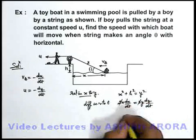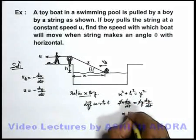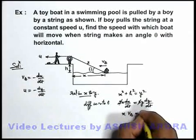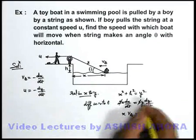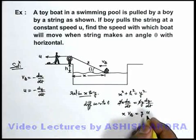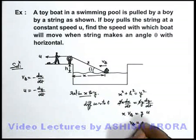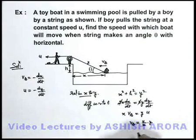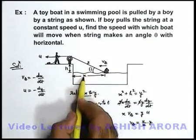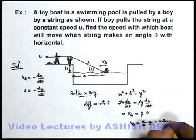Here the factor of two cancels out. We can write x·(dx/dt) = v_b and y·(dy/dt) = u, and the negative signs on both sides cancel out. So the velocity of the boat can be written as v_b = u·(y/x). Now y/x is simply sec theta, so the answer is v_b = u·sec θ.